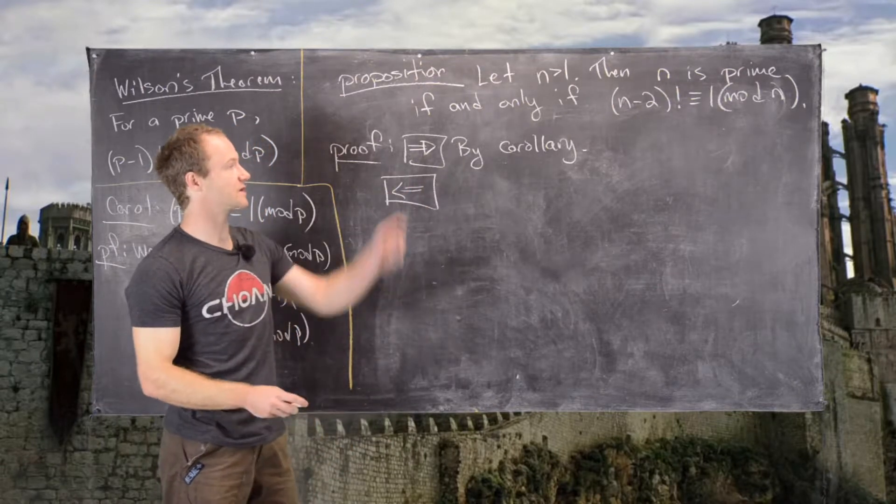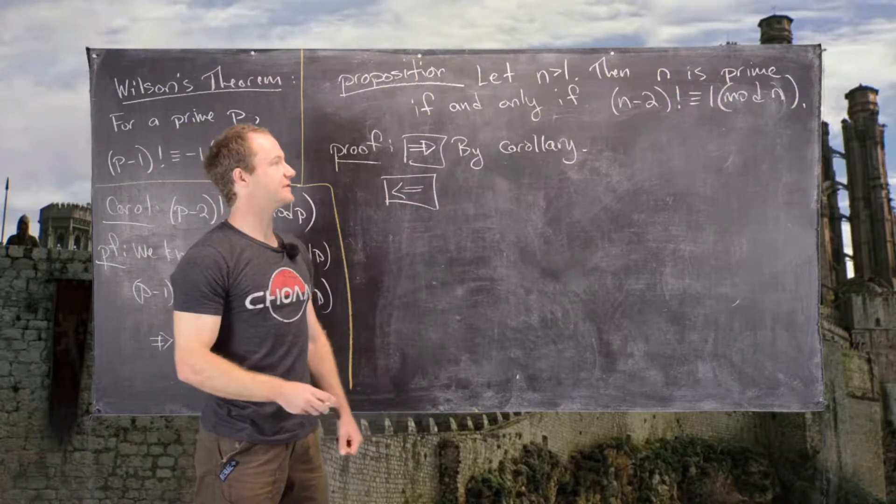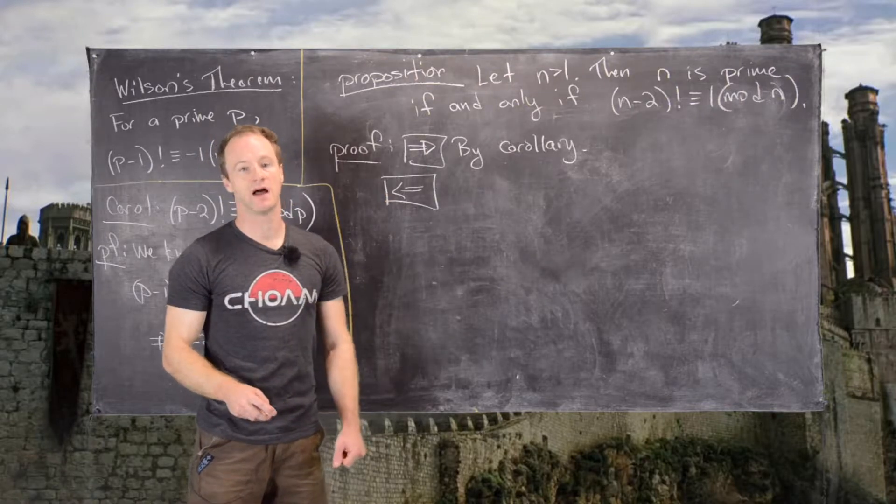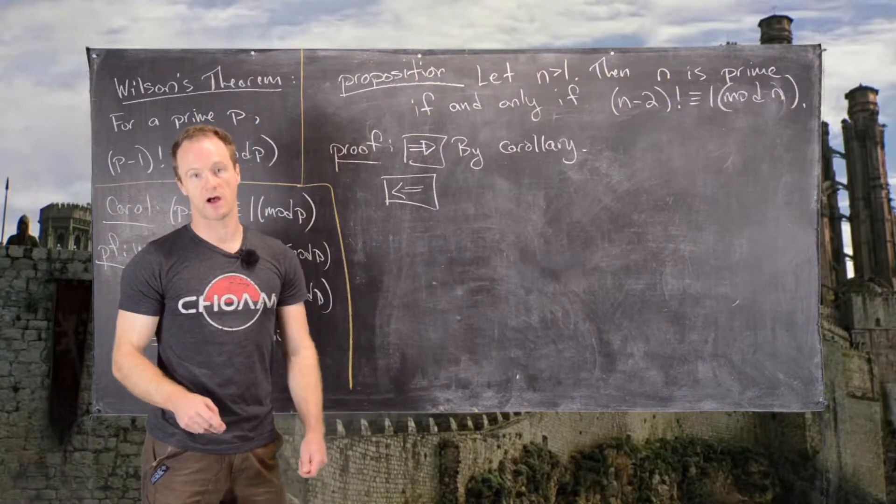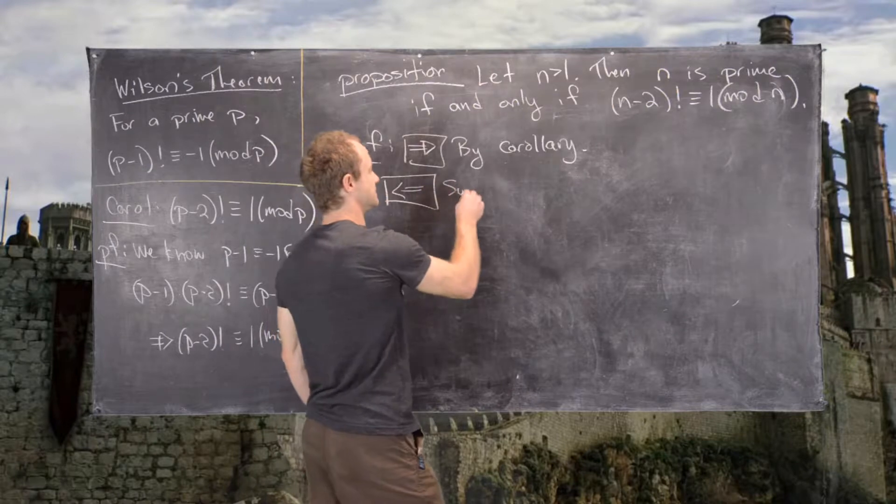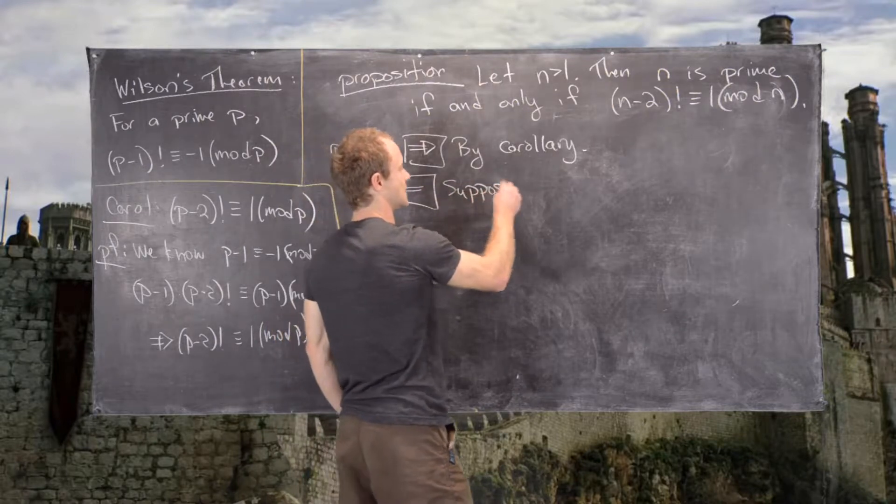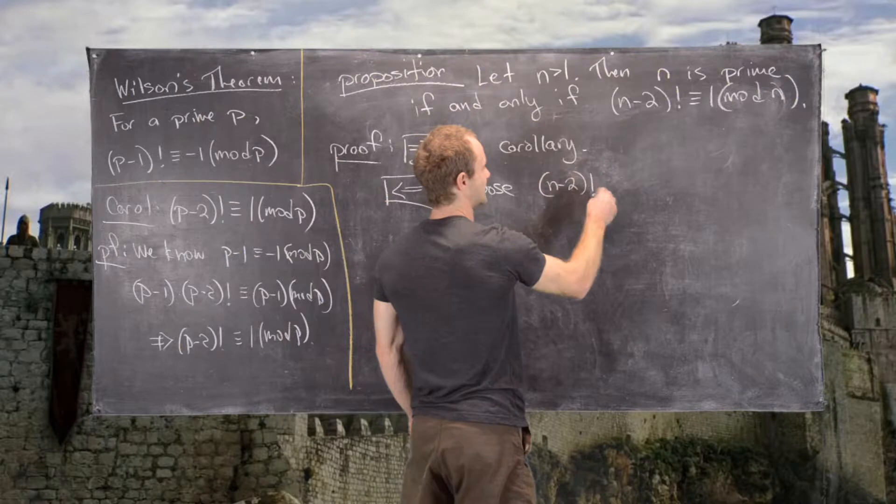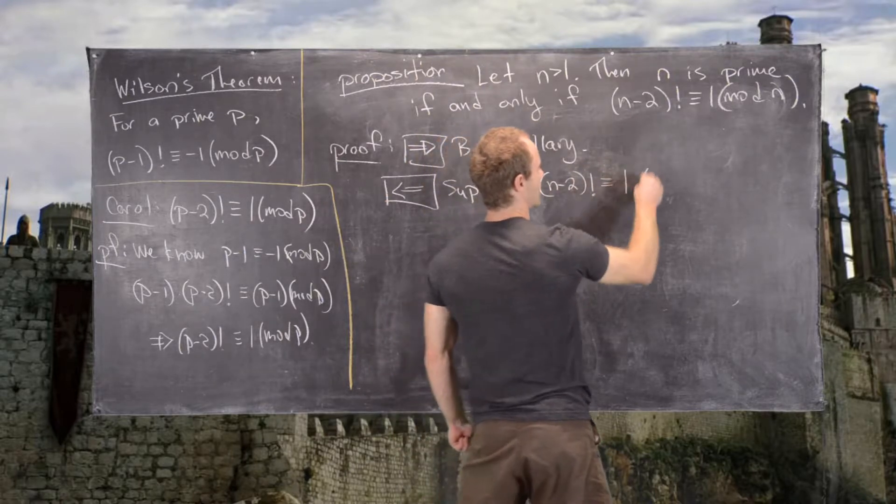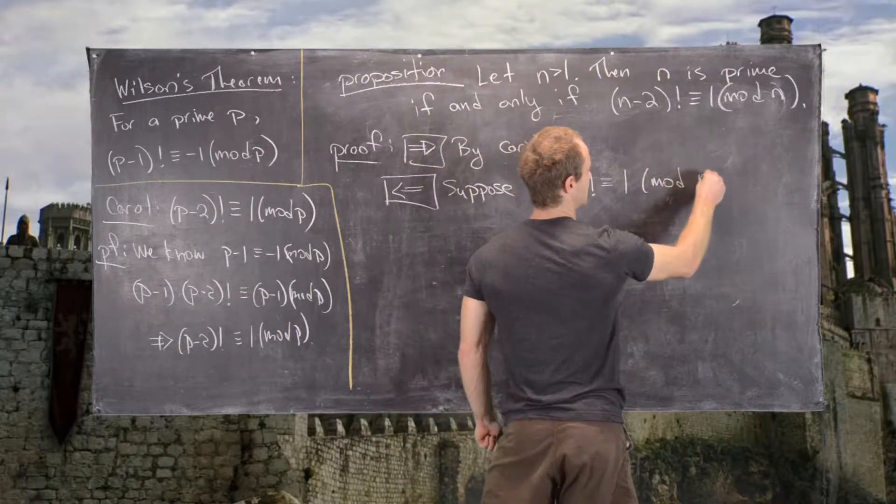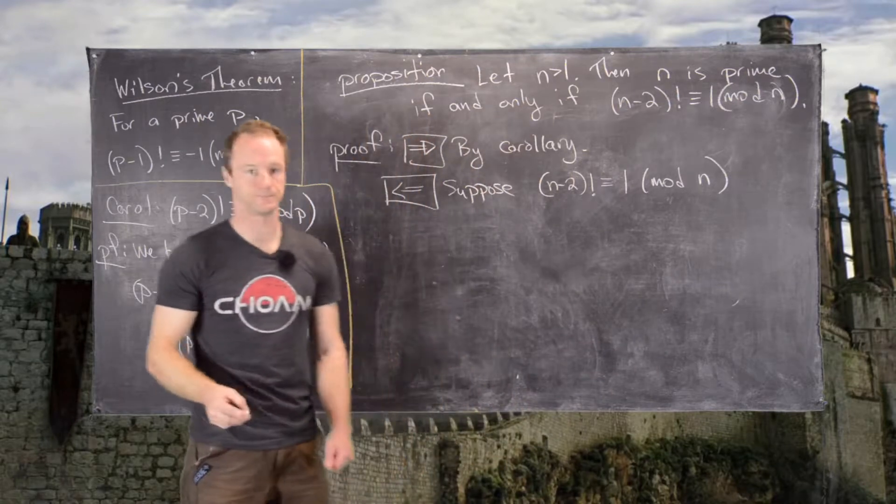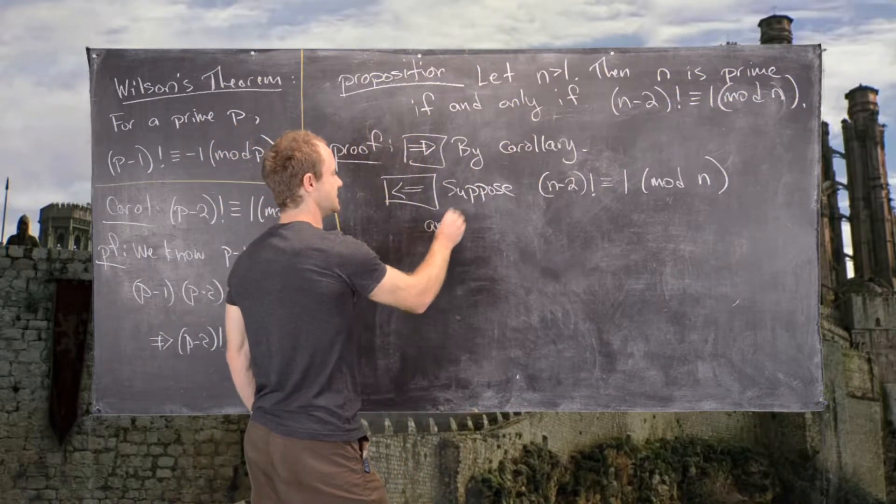In other words, show that if (n-2)! is congruent to 1 mod n, then n is prime. So let's suppose that (n-2)! is congruent to 1 mod n.